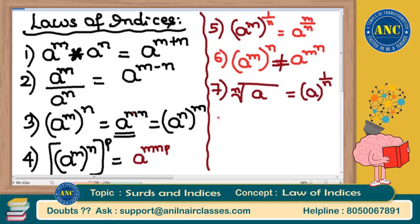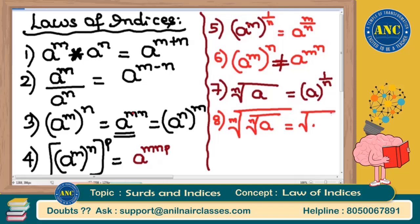Suppose we have the nth root of a, and we raise it further with an mth root — that is, the mth root of the nth root of a. This is equal to the mn-th root of a. Both expressions are absolutely the same: mth root of (nth root of a) = (mn)th root of a.